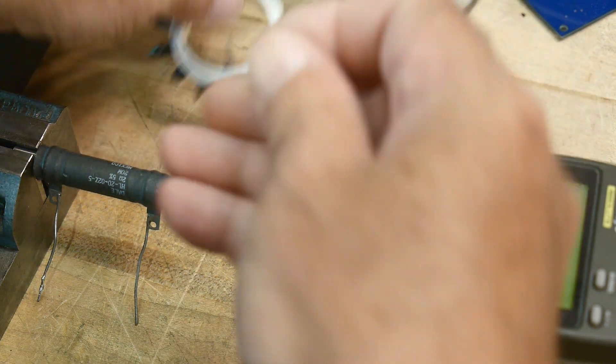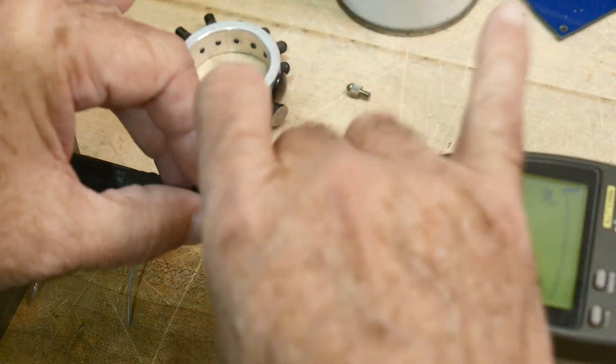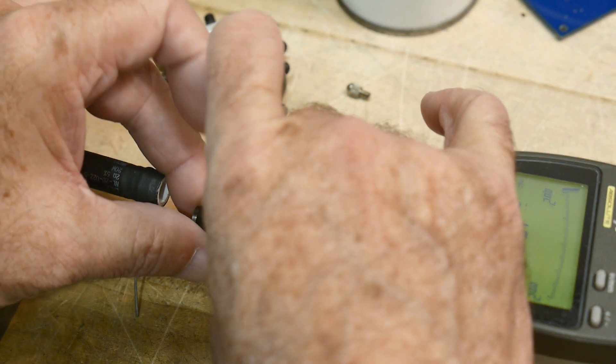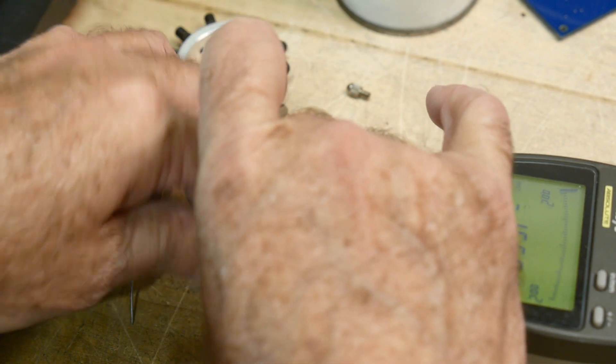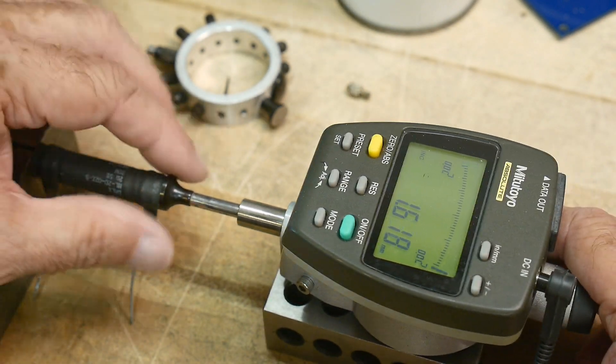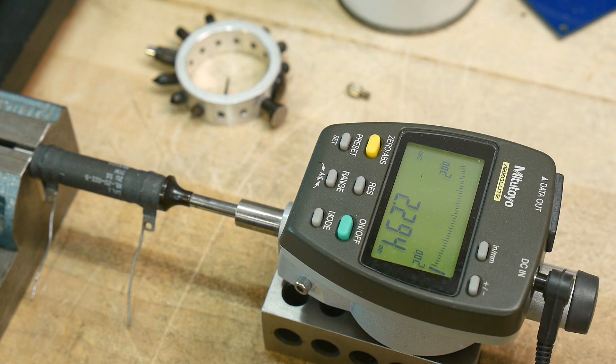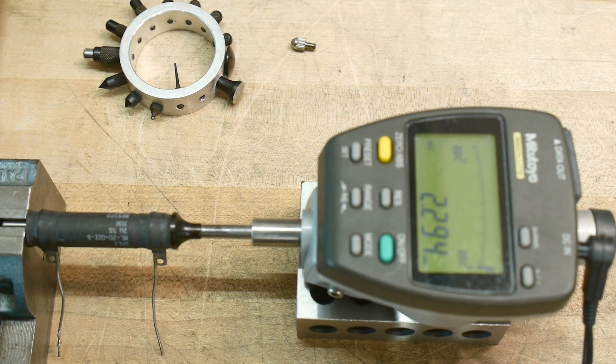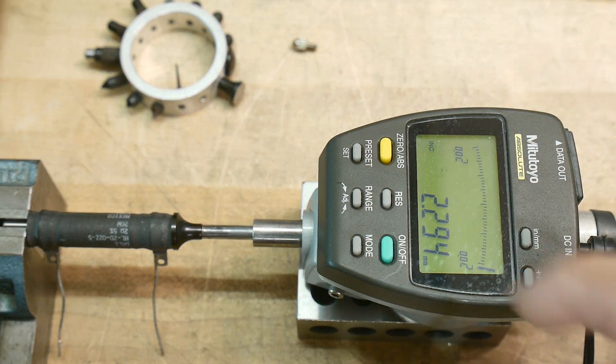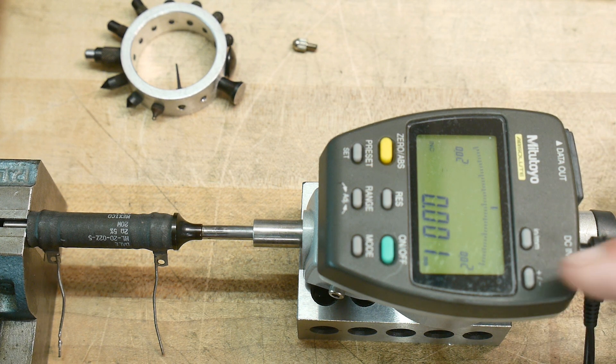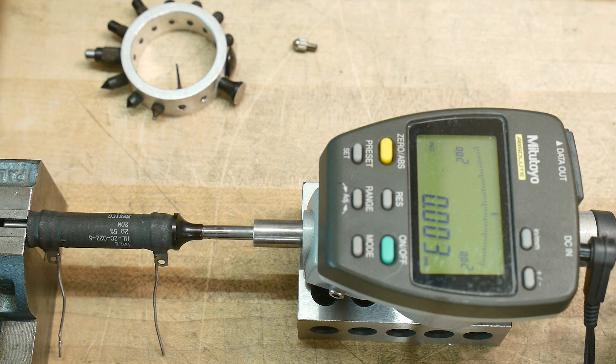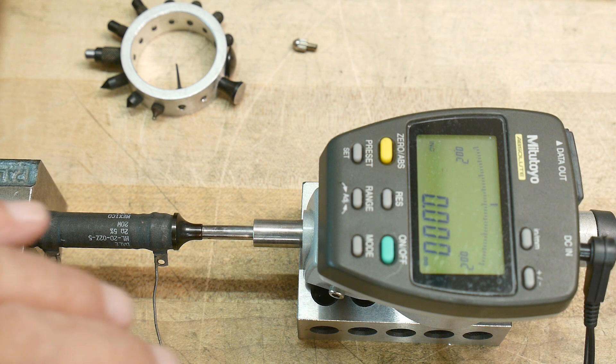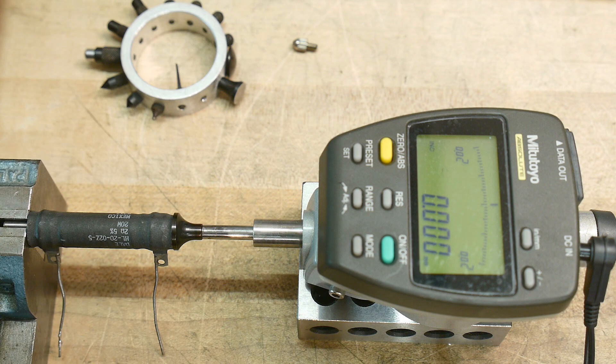We're just going to use this big one here. Now we have this big surface and I'll put that onto our Mitutoyo. Everything is nice and stable. We are measuring in millimeters, so that little last digit there is one micron. We can zero it out anytime by hitting the yellow button.